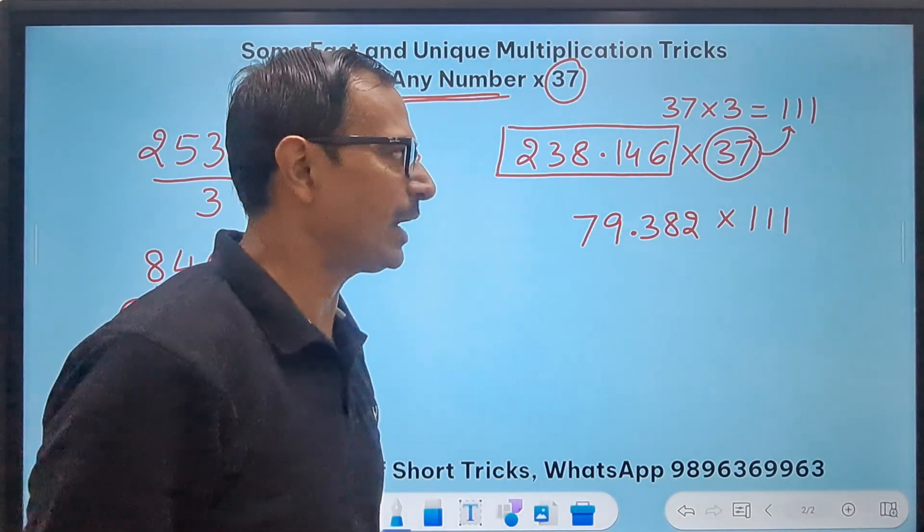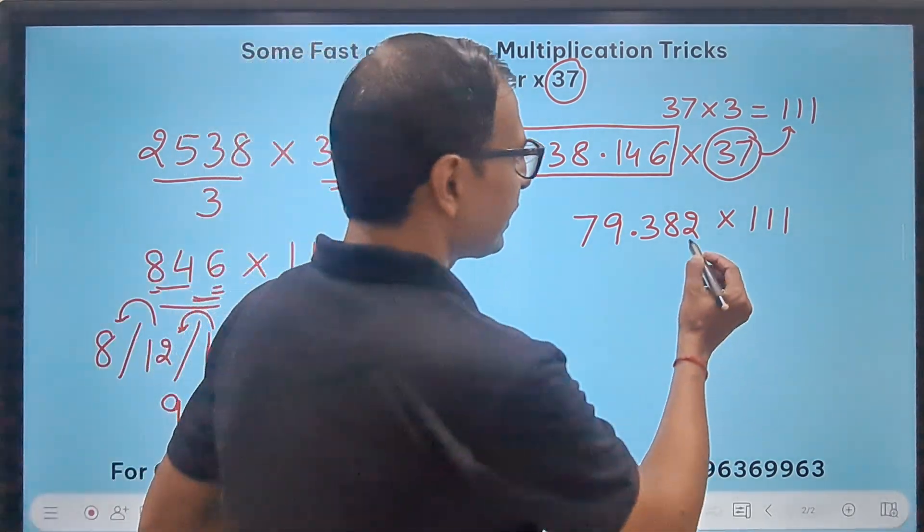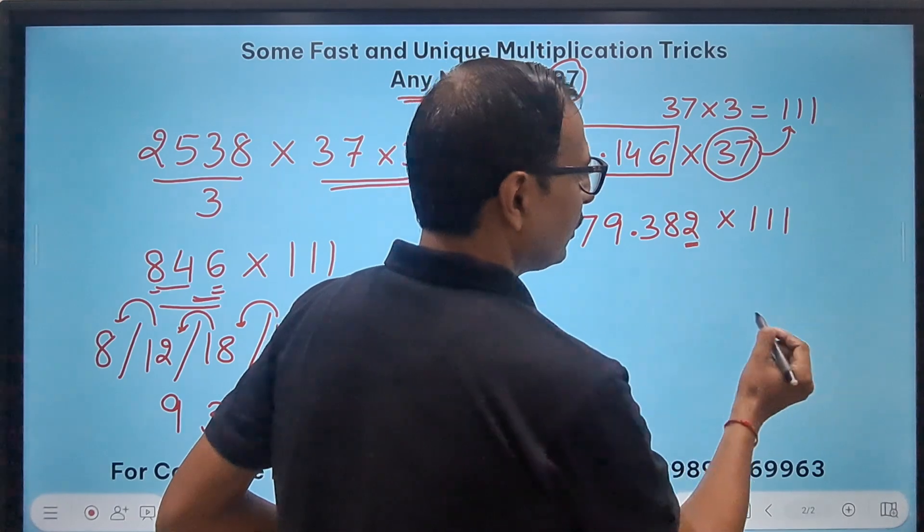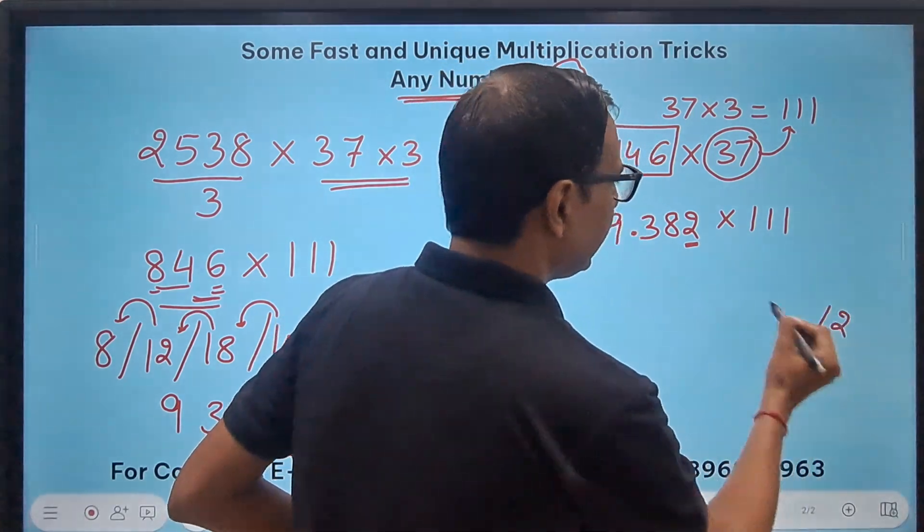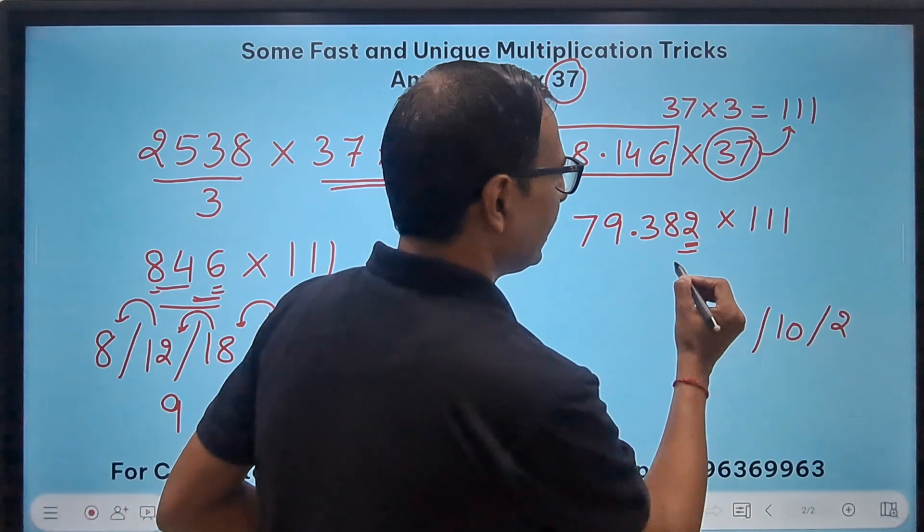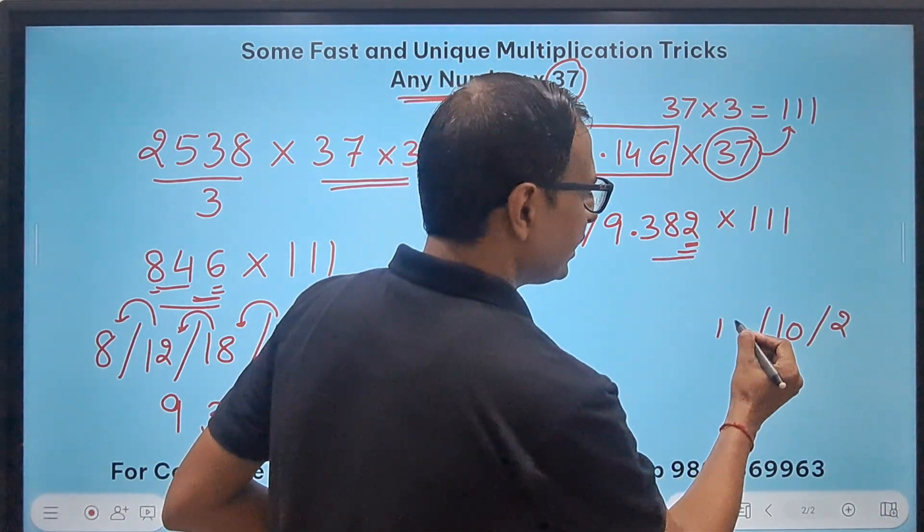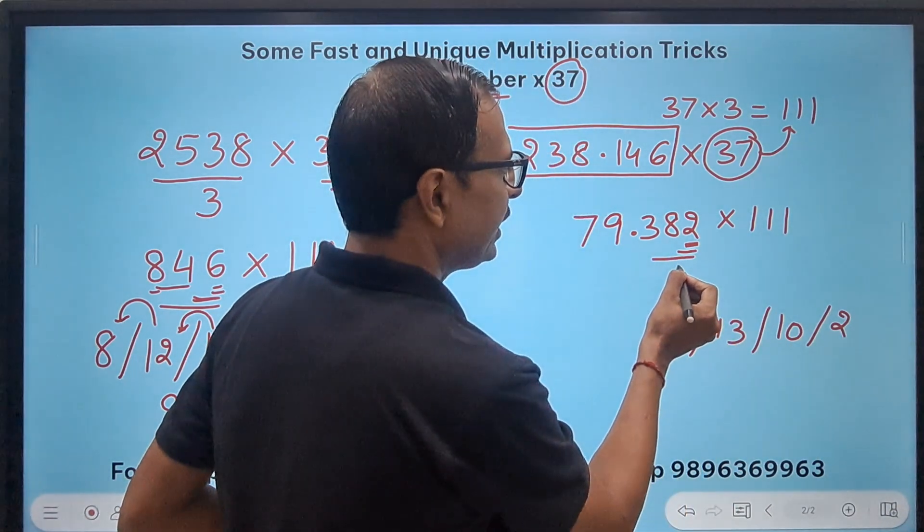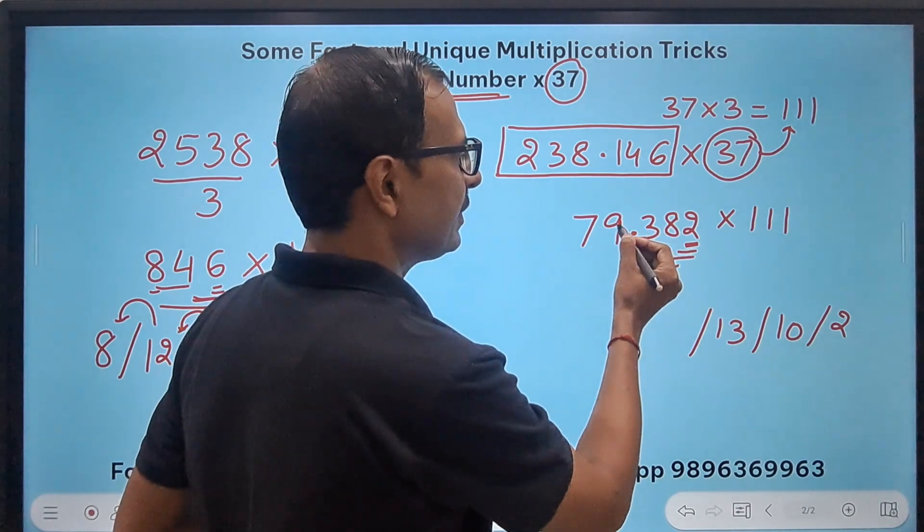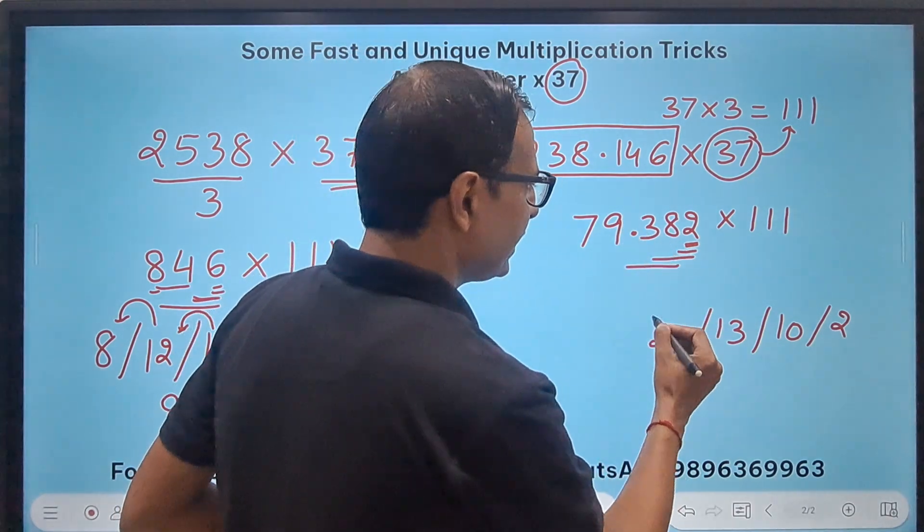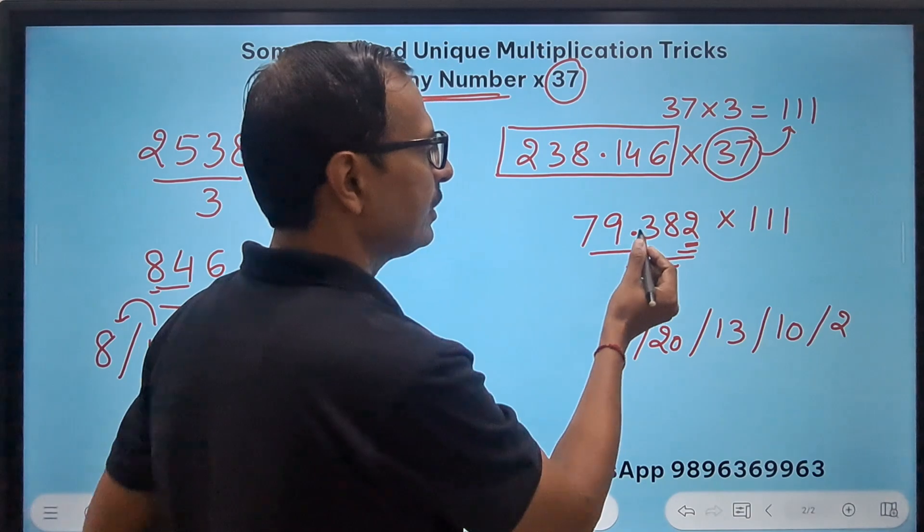So 79.382 times triple 1, let's start writing from the right hand side here now. Single digit 2 and then 2 plus 8 is 10 and the triple gives you a 13 and then start from 8 and take a triple this is 11 plus 9, 20.